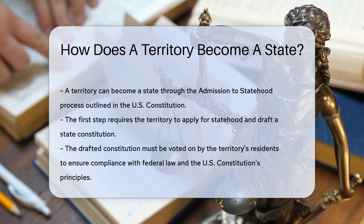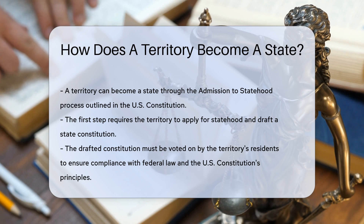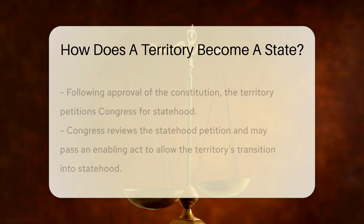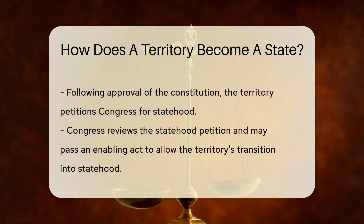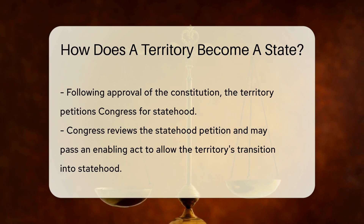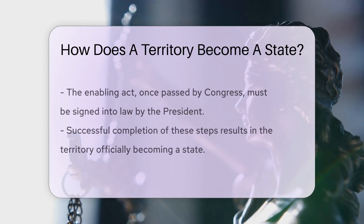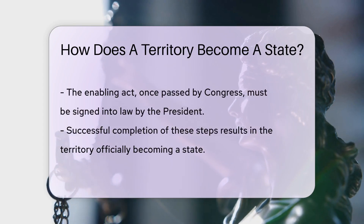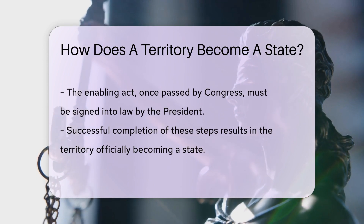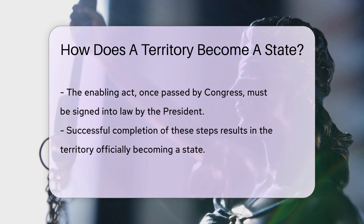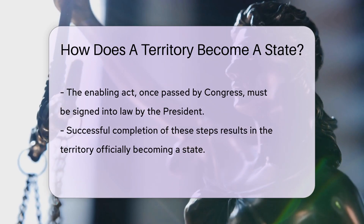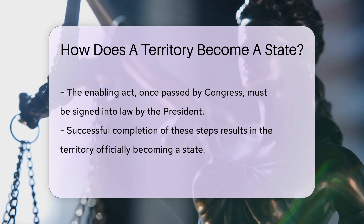First, the territory must apply for statehood and draft a state constitution. The territory's constitution is then voted on by its residents to ensure it aligns with federal law and the principles of the U.S. Constitution. If the constitution is approved, the territory petitions Congress for statehood, and Congress then reviews the petition and may pass an Enabling Act, allowing the territory to become a state.